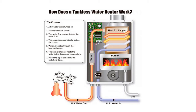However, a tankless water heater's output is limited by the flow rate. Typically, a tankless water heater provides hot water at a rate of 2 to 5 gallons per minute. Gas-fired tankless hot water heaters produce higher flow rates than electric ones.